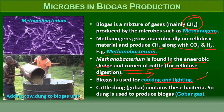Cattle dung (gobar) contains these bacteria, so dung is used to produce biogas — gobar gas. The dung should be fresh, not dry, because dry dung will not have active bacteria available. These are the parts of a biogas plant: a collection tank, an outlet for gas, and another outlet to remove the slurry.